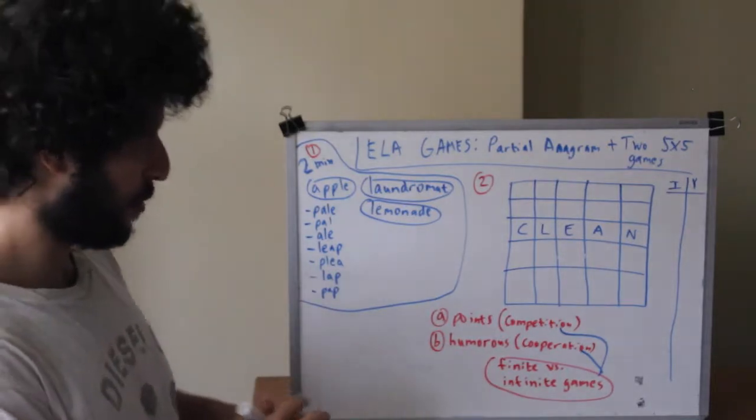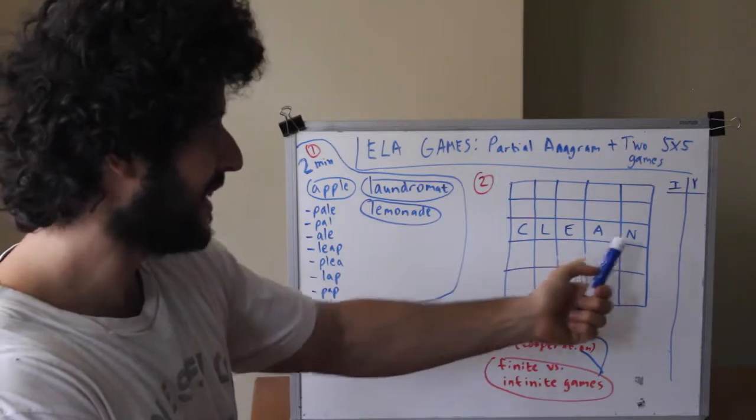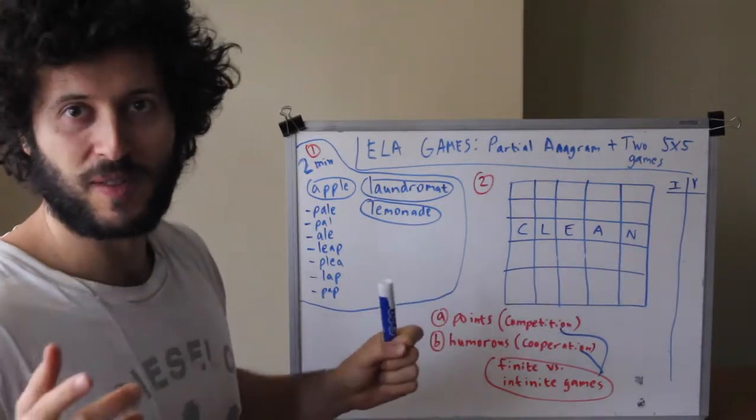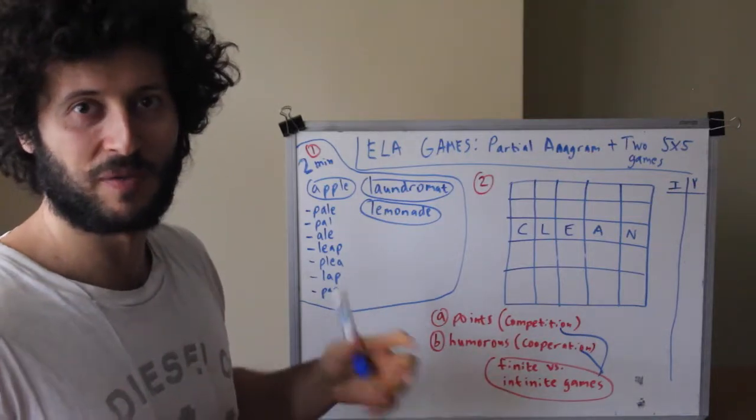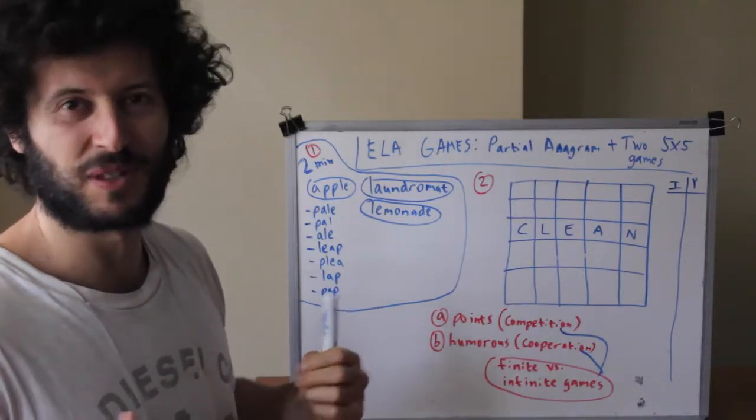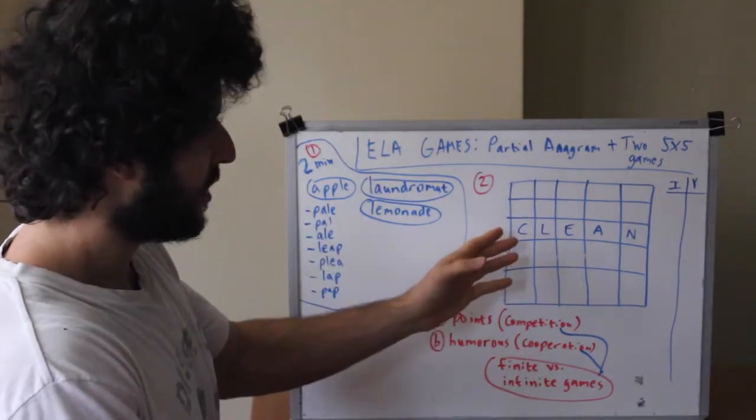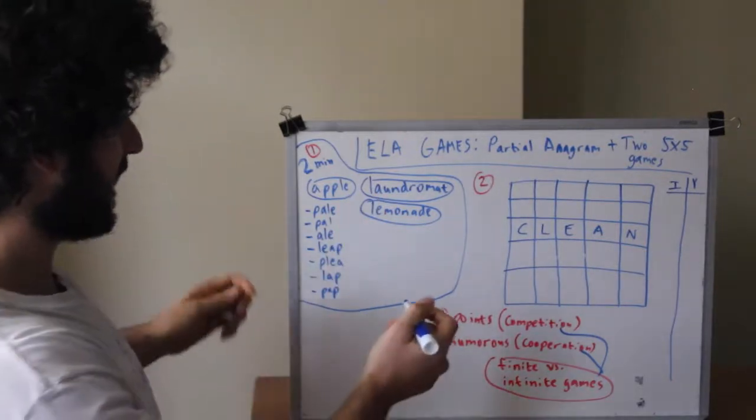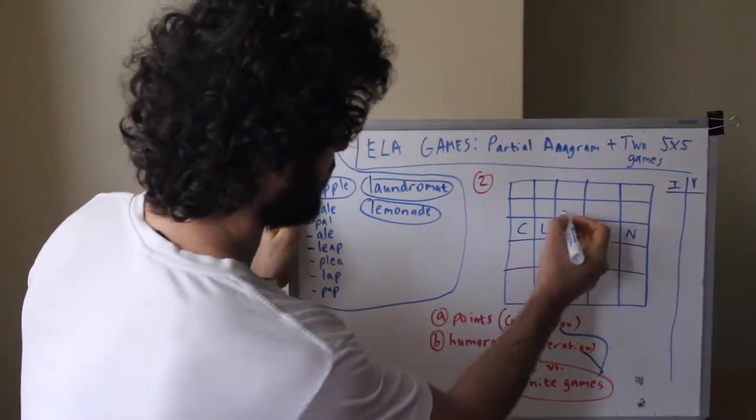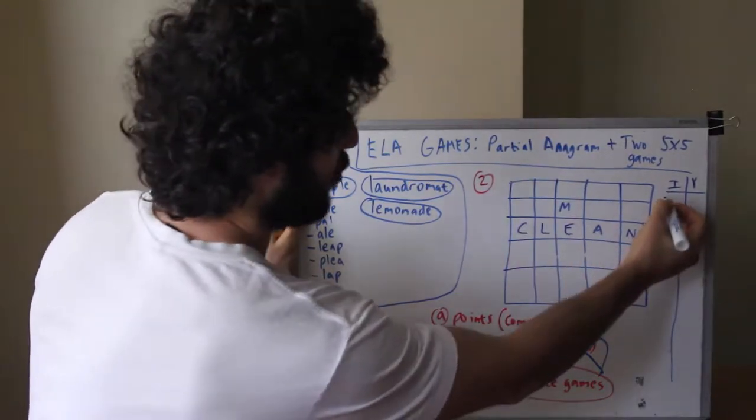Alright so here's the way it works. You start off with any five letter word. In our case I've started off with clean. And you might also find that some words are better than others. Some words make for a very interesting game, others make for kind of a boring game.